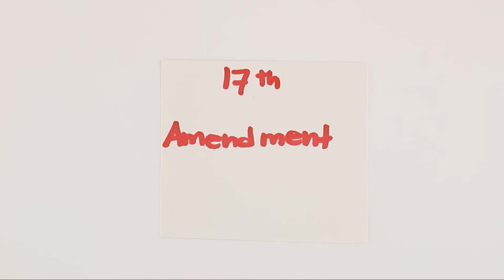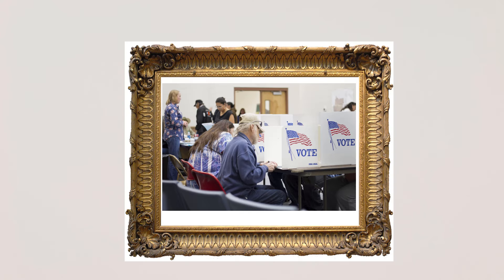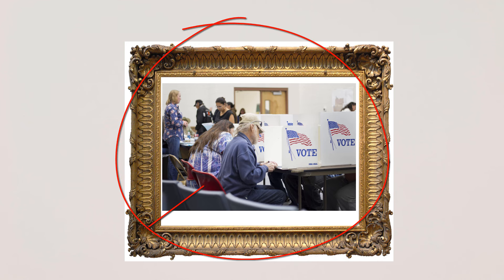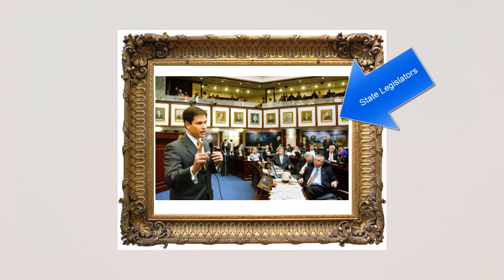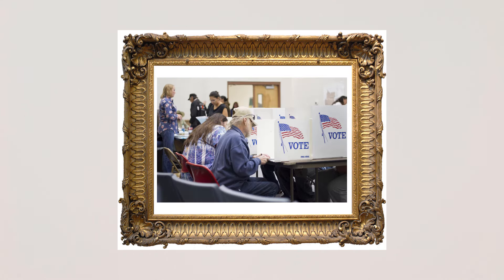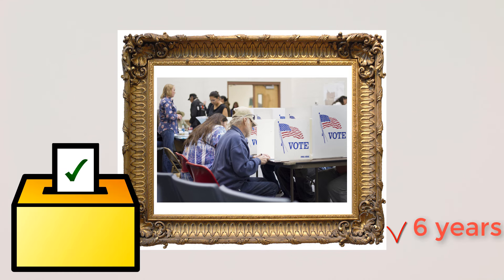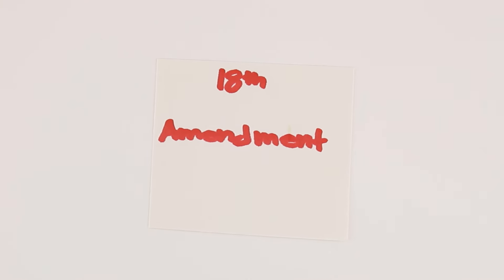Next up, the 17th Amendment calls for the direct election of senators. Before the 17th Amendment, citizens didn't get to vote for their senators. Instead, senators were chosen by state legislatures, which are lawmakers within states. Now citizens get to choose their two senators by voting in an election every six years.